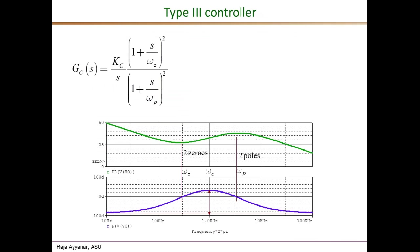For the Type 3 controller, the transfer function now has two zeros at the same location omega_z and two poles at the same location omega_p. In the magnitude Bode plot, the initial slope is minus 20 dB per decade as with other controllers, but the presence of two zeros adds plus 40 dB, so it goes up at plus 20 dB per decade. The two poles eventually add another minus 40 dB, bringing the slope back down to minus 20 dB at high frequencies.